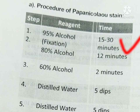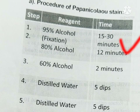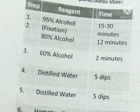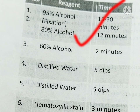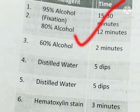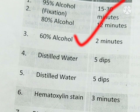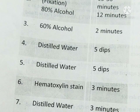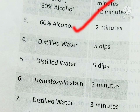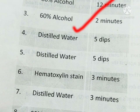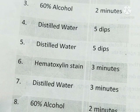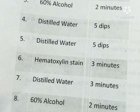Place the smear into 95% alcohol for 15 to 30 minutes. Next, place the smear into 80% alcohol for 2 minutes. Next, 60% alcohol for 2 minutes. After that, distilled water 5 dips, and again distilled water 5 dips.